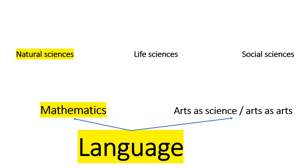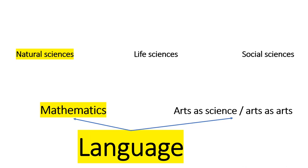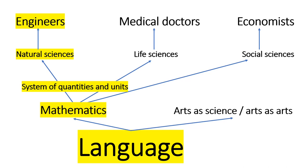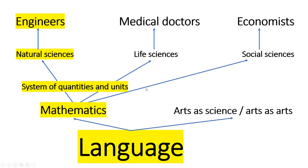Once we have languages and mathematics, then and only then we can build other branches of sciences such as social sciences, life sciences, and natural sciences. Based on them we can efficiently educate economists, medical doctors, and engineers. Additionally, we need a system of quantities and units, which is mostly needed for natural science, engineering, and life sciences. I put the box of system of quantities and units touching only in a single point the arrow showing towards social sciences, simply because I am not sure they really use our quantities and units.